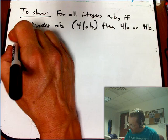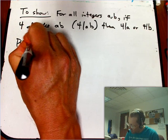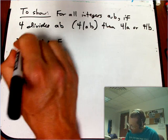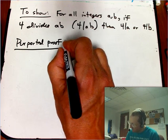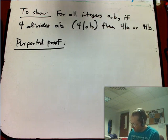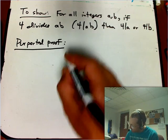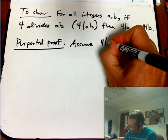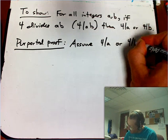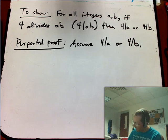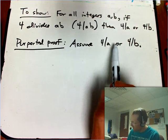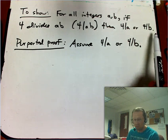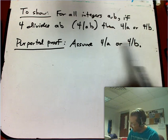So let me say purported proof. At whatever point you want to while you're watching the video, you can think about whether you think this is a true fact or not. Here's the purported proof. Let's assume 4 divides a or 4 divides b. Notice I have assumed not the negation of the conclusion, I have assumed the conclusion. That's very suspicious.